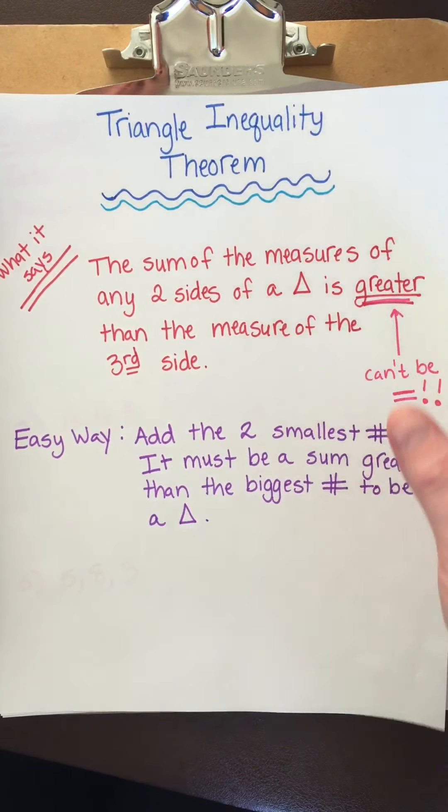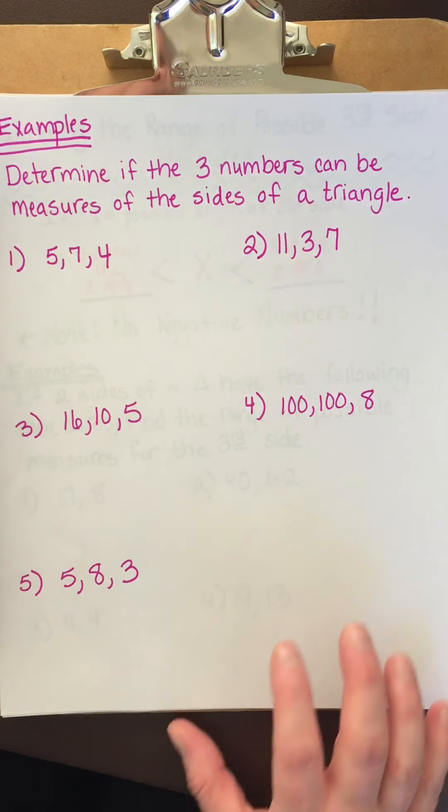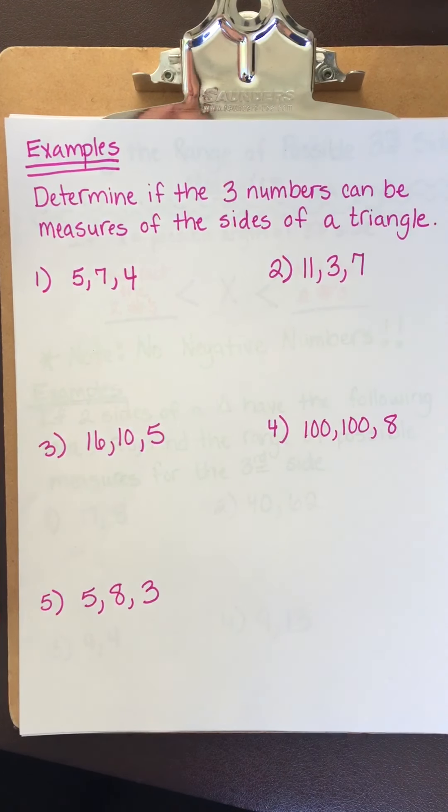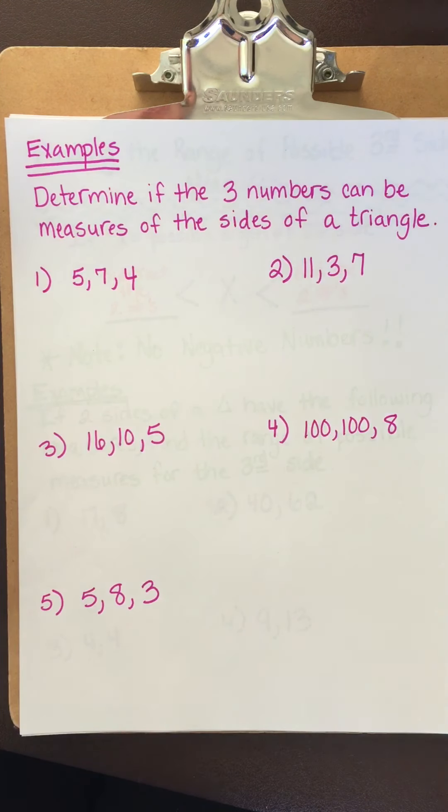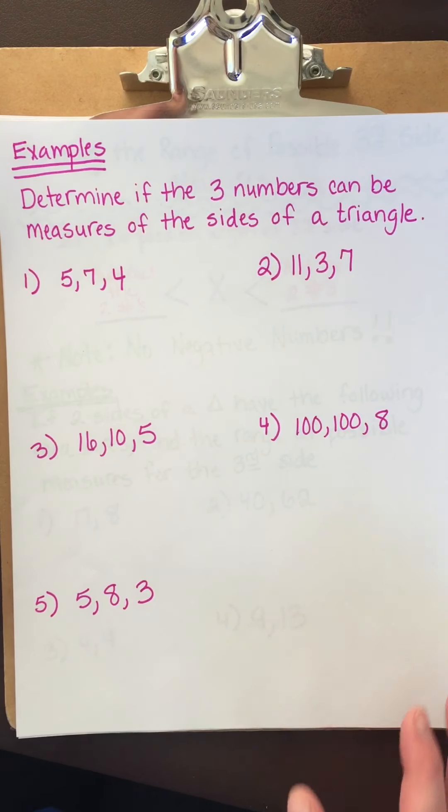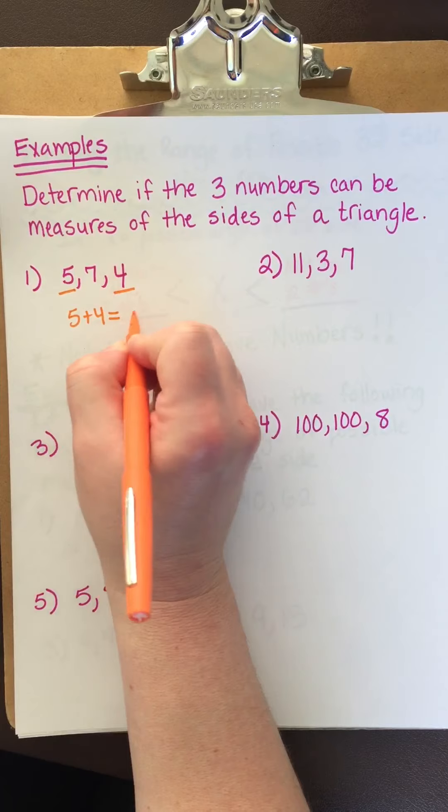This is super easy. And the directions will be something like this: Determine if the three numbers can be measures of the sides of a triangle. So could these make a triangle? Let's find out. So we have 5, 7, and 4. So the two smallest numbers are 5 and 4. You add them up.